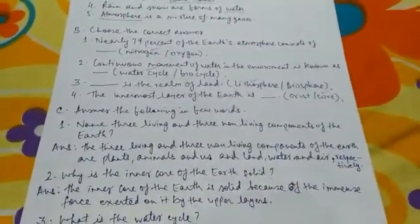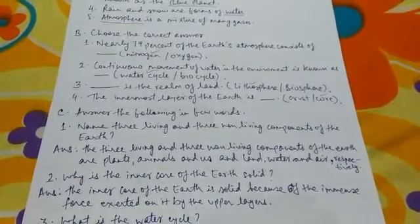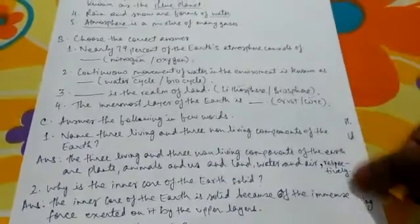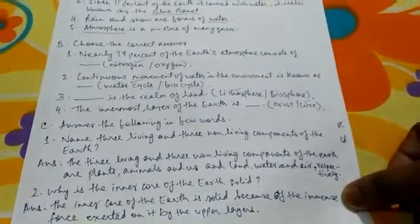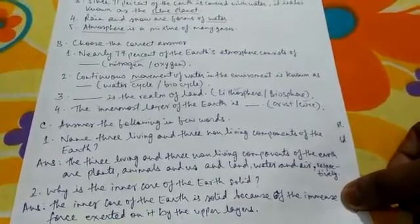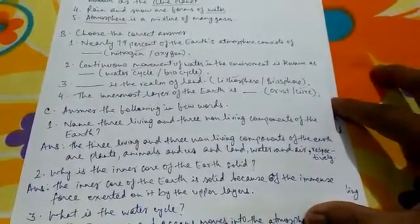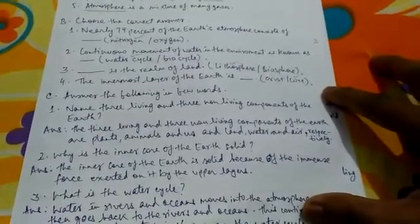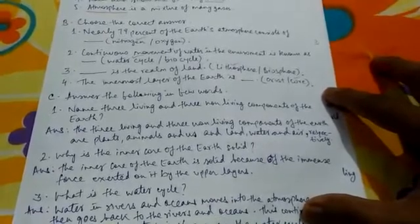Question C: Answer the following in few words. Question 1: Name 3 living and 3 non-living components of the Earth. The answer is: the 3 living components are plants, animals and us, and the 3 non-living components are land, water and air respectively. Question 2: Why is the inner core of the Earth solid? The inner core of the Earth is solid because of the immense force exerted on it by the upper layers.